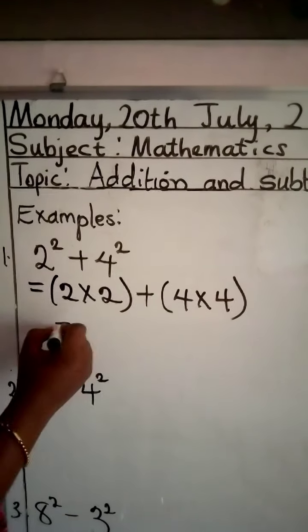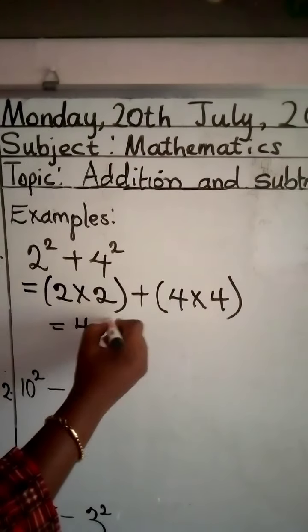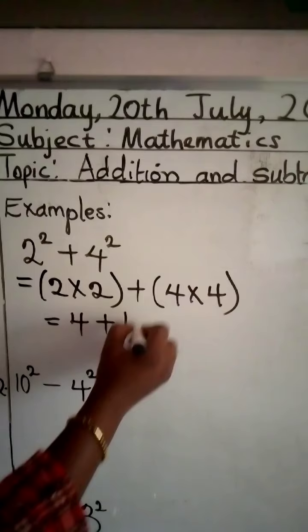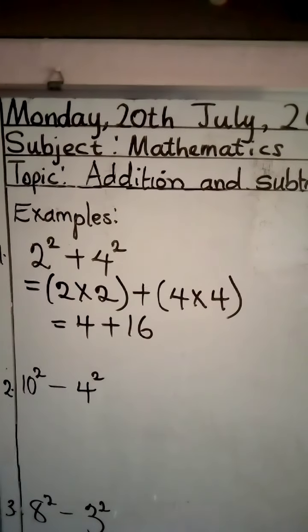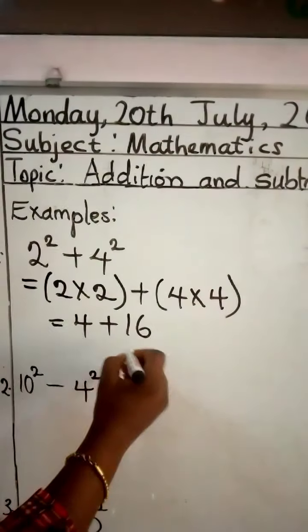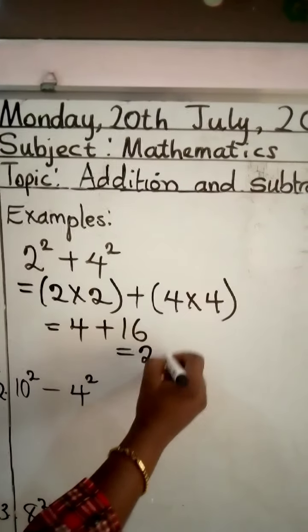2 times 2 is what? 4. Beautiful. And 4 times 4 will give us what? 16. Good. Now, if you put this together, you get what? 16 in your head and 4 fingers. Fastest finger, please. Good. 20.